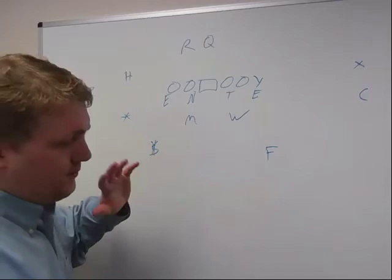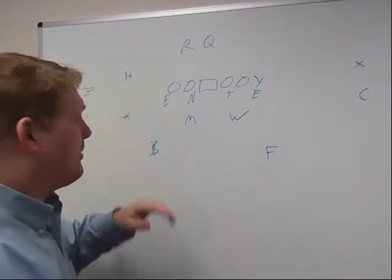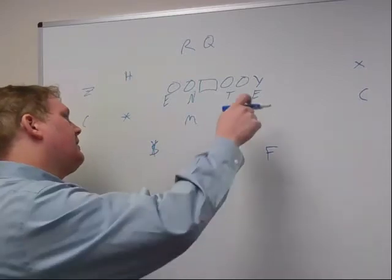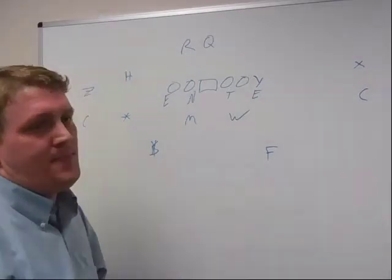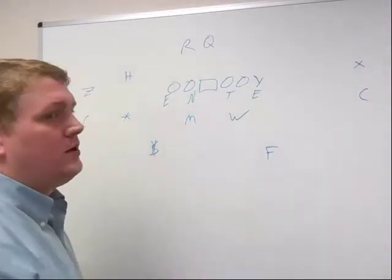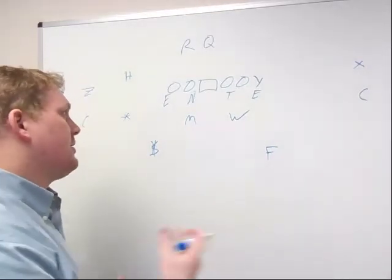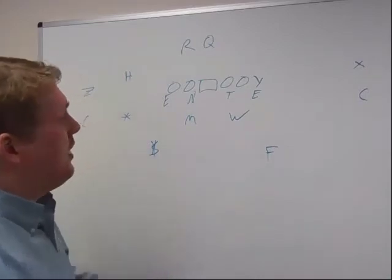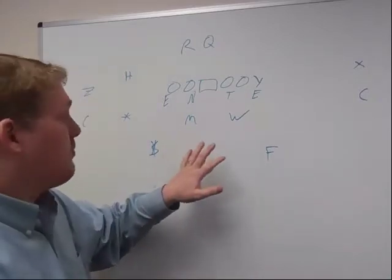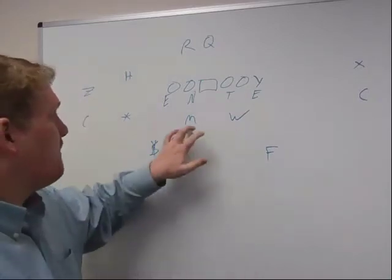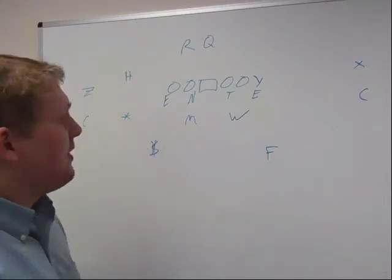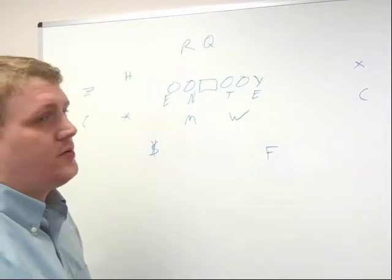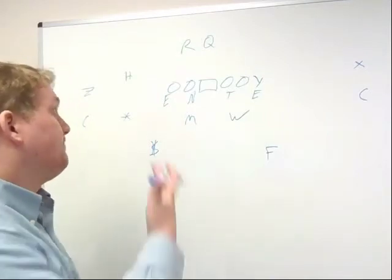Most six-man or six-man-and-a-half-slide type protections essentially involve the offensive line taking the down lineman and then one or two called blitz threats based on the protection. So in this instance, the offensive line essentially is going to take these four individuals and then one of three possible called blitz threats: Will, Mike, or Star. And then the running back is responsible for the remaining two based on the call.